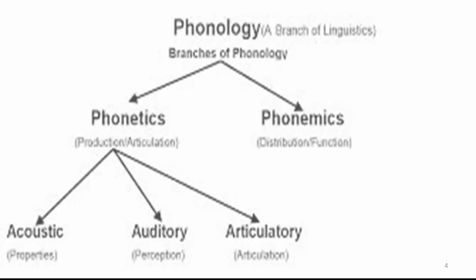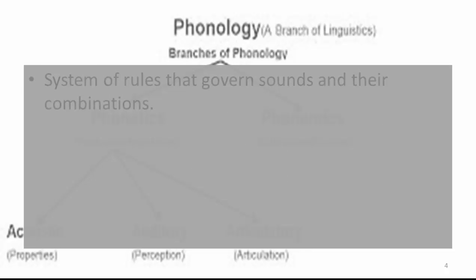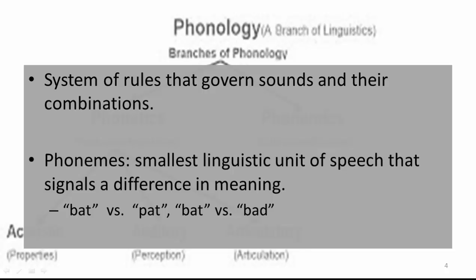Phonology is the sound system of a language and the rules that govern the sound combinations. The smallest unit of phonology is the phoneme. Phonemes are any of the perceptually distinct units of sound in a specified language that distinguish one word from another. For example, p, b, d, and t in the English words bat, pat, and bad.